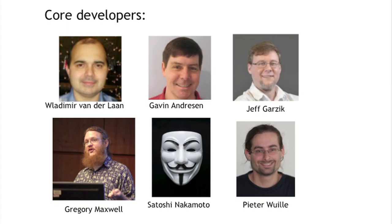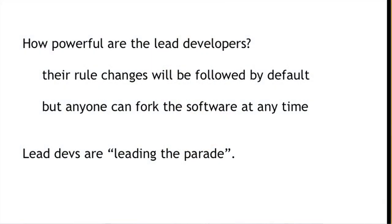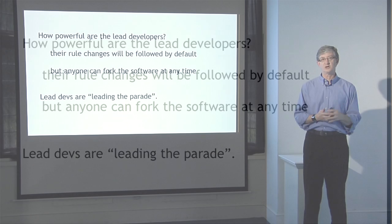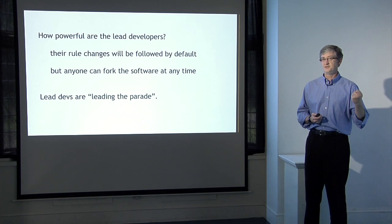The other group we need to talk about with respect to the Bitcoin core software are the core developers — about six people, though Satoshi Nakamoto is not currently active. The other five are currently involved as core developers leading the effort to continue development on the Bitcoin core and are in charge of which code gets pushed into new versions. On one hand they're powerful because the rule changes that get shipped in the Bitcoin core will be followed by default — they literally hold the pen that can write things into the de facto rule book of Bitcoin.